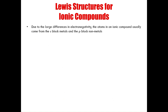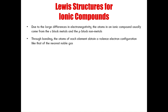Due to large differences in electronegativity, the atoms in an ionic compound usually come from the s-block metals and the p-block non-metals. This makes sense because s-block metals are very desperate to lose electrons, while p-block non-metals are very keen on gaining electrons to reach stability. Through bonding, atoms of each element obtain a valence electron configuration equivalent to that of the nearest noble gas — they want to become isoelectronic with the nearest stable element.